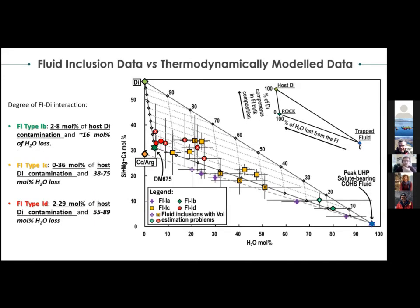To express this post-entrapment modification more quantitatively, by calculating the barycentric coordinates in this type of plot for each fluid inclusion, we find that Type 1B inclusions experienced between 2 and 8 mol% diopside contamination and only up to 60% water loss. Type 1C experienced between 0 and 36% diopside contamination and between 38 and 85% water loss. Type 1D experienced between 2 and 29% diopside contamination and between 55 and 89% water loss.